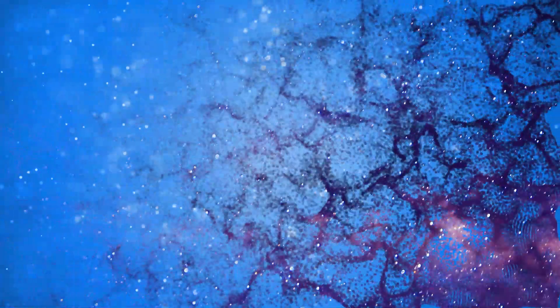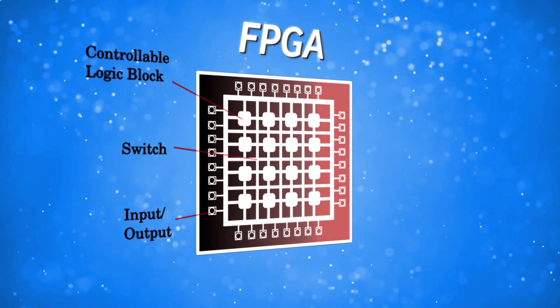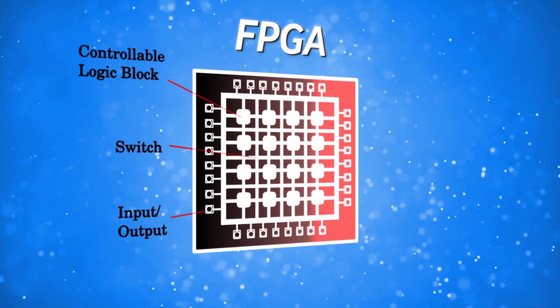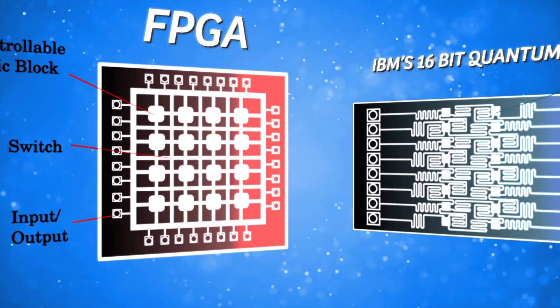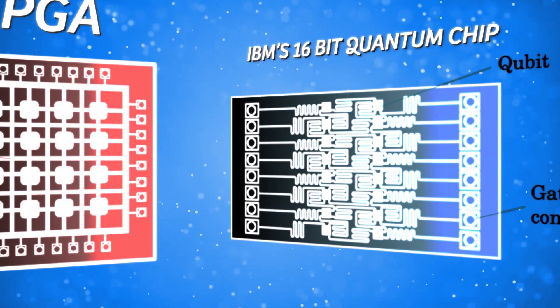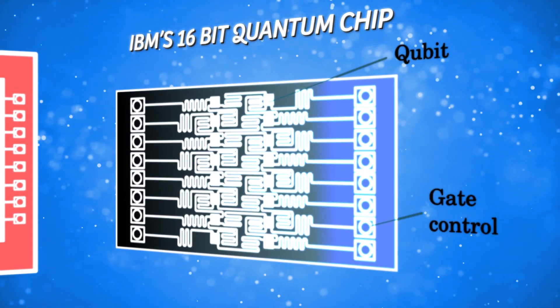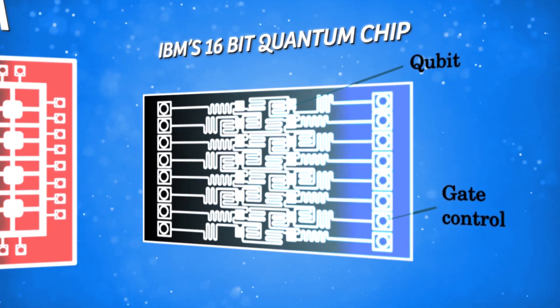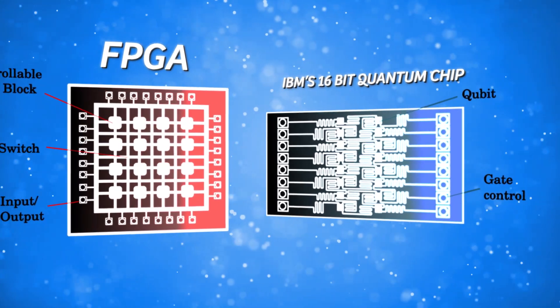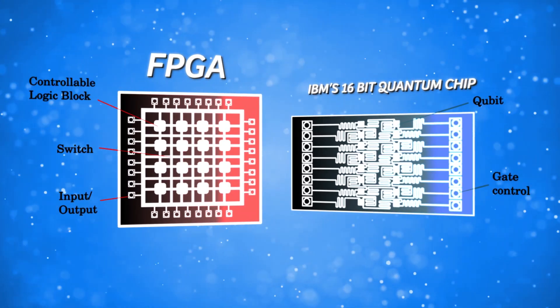Firstly, quantum devices can be used to accelerate machine learning. Current quantum technologies resemble special purpose hardware, like ASICs, rather than the general purpose CPU. They're hardwired to implement a limited class of quantum algorithms. More advanced quantum devices can be programmed to run simple quantum circuits, just like FPGAs.